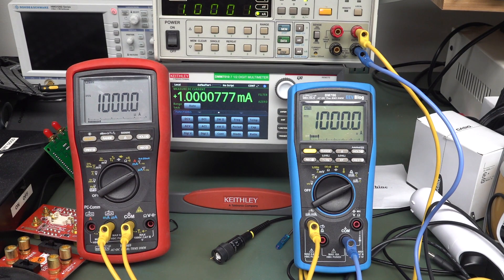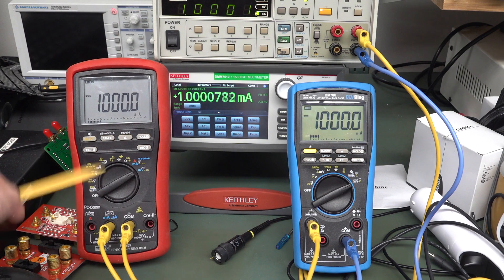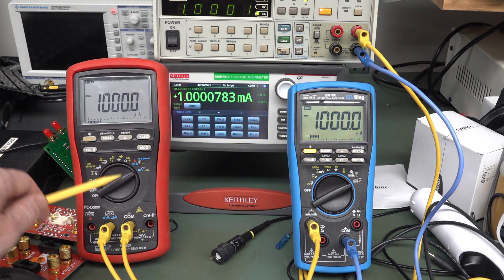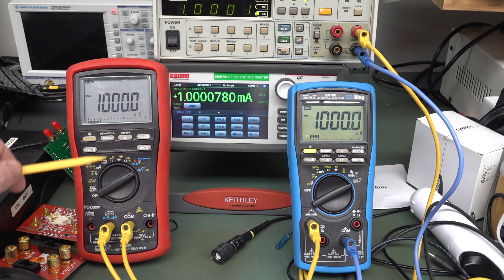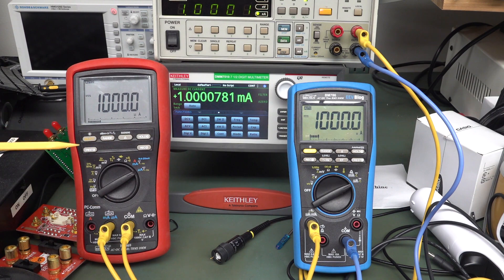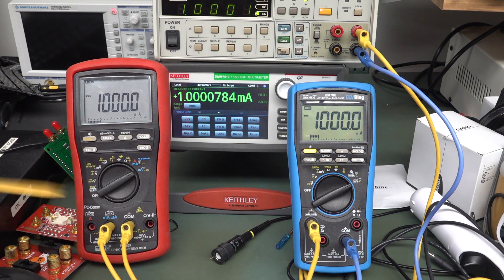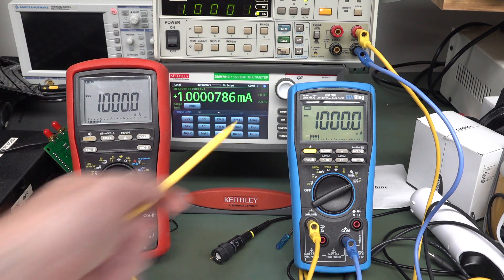They love their multimeters and the discussion came up between the Brymen 869 here - I've got the original, it's not the 869S, I believe that's just a newer production version, I don't think the specs are any different - and the Brymen BM786 EEVblog branded, of course, because it's an excellent meter.